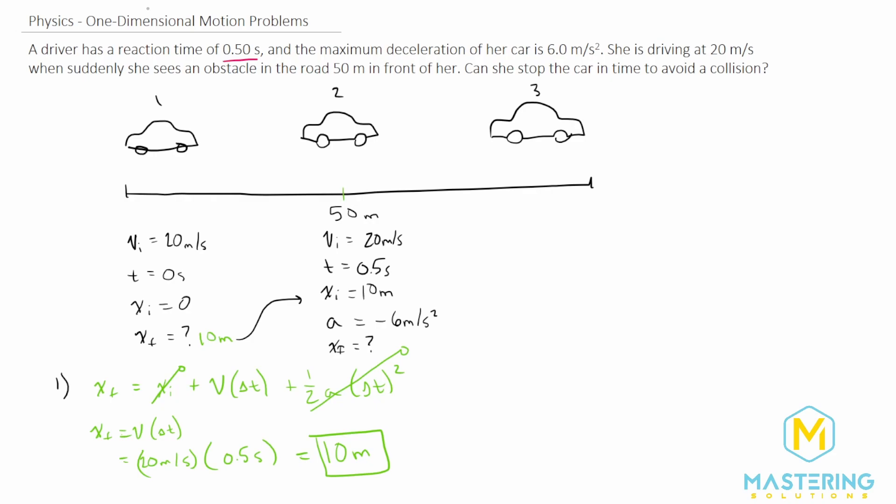So to do that, we're going to use the equation, v final squared is equal to v initial squared, plus 2a times delta x. So now we are trying to solve for delta x. So let's isolate that.